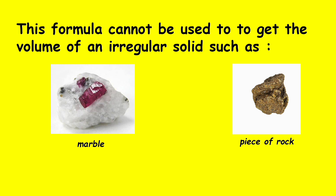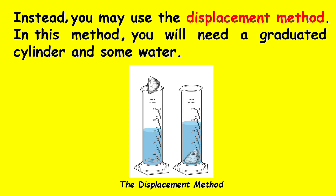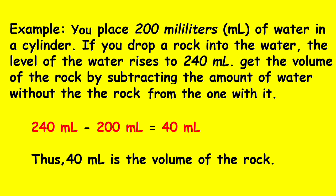This formula cannot be used to find the volume of an irregular solid such as a marble or a piece of rock. Instead, you may use the displacement method. In this method, you will need a graduated cylinder and some water. For example, you place 200 milliliters of water in the cylinder. If you drop a rock into the water, the level of the water rises to 240 milliliters. Get the volume of the rock by subtracting the amount of water without the rock from the one with it: 240 milliliters minus 200 milliliters equals 40 milliliters. Thus, 40 milliliters is the volume of the rock.